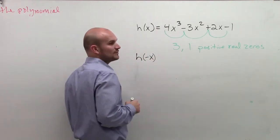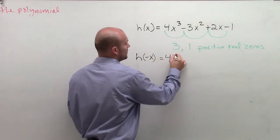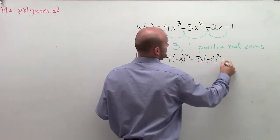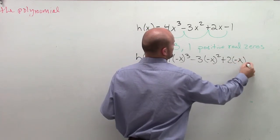So it's going to be 4 times negative x cubed minus 3 negative x squared, plus 2 times negative x minus 1.